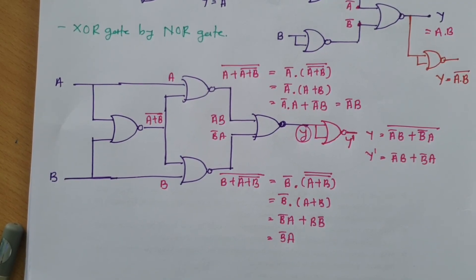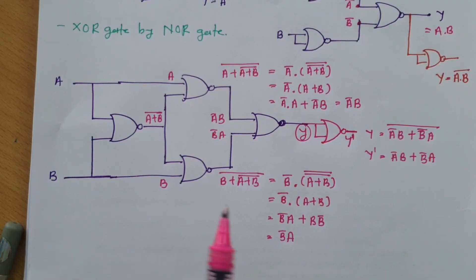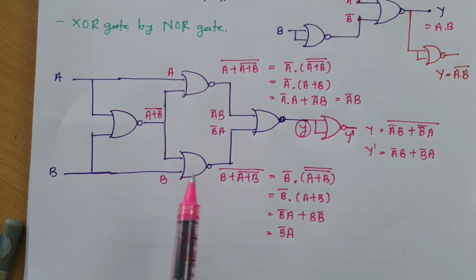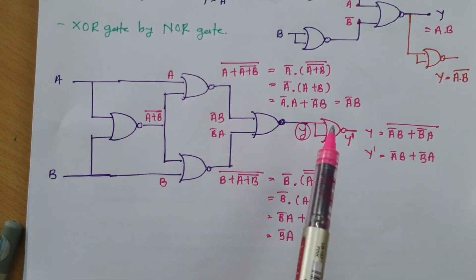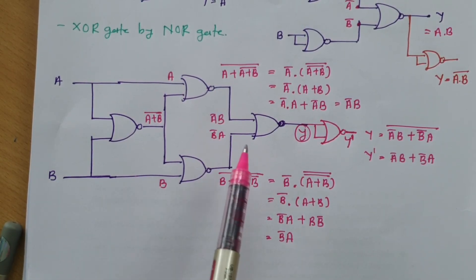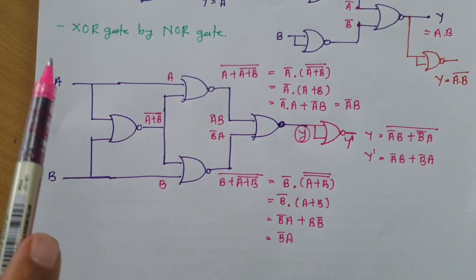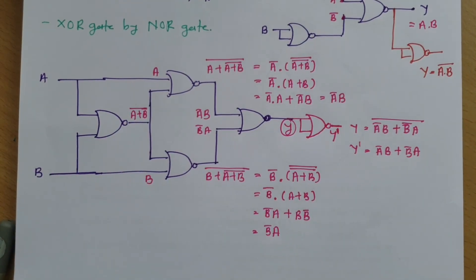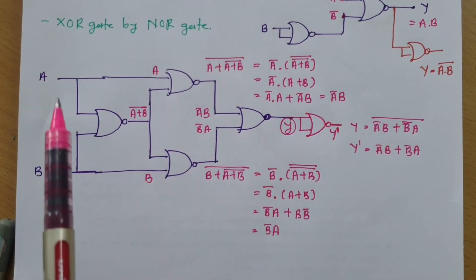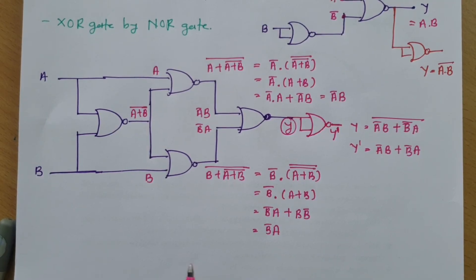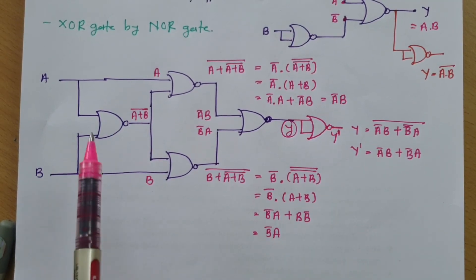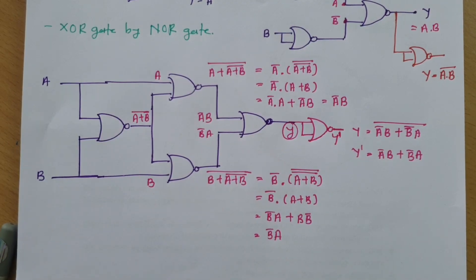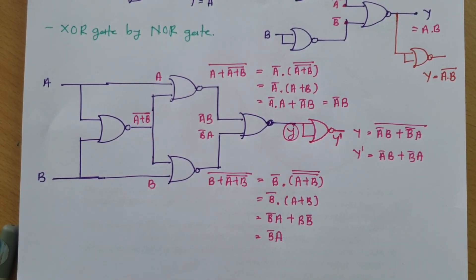These are the key things to focus on. There can be questions about implementing XOR directly. There are many ways, but this circuit uses the minimum number of NOR gates to implement XOR gate. Other methods exist but require more NOR gates, so I have used this optimal circuit.